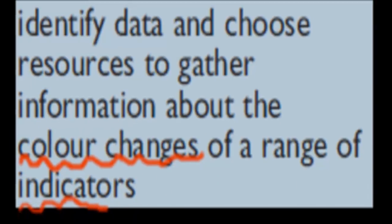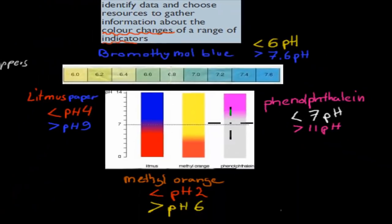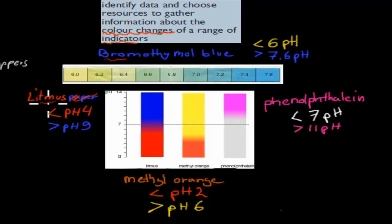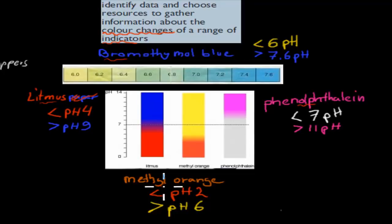In this video, we're going to cover four indicators: bromothymol blue, litmus, phenolphthalein, and methyl orange. And if you remember, these all have their specific ranges — meaning what areas they turn colors, or change their color.